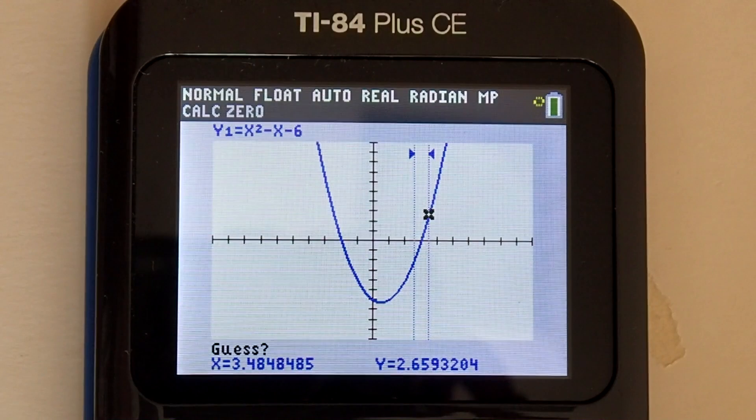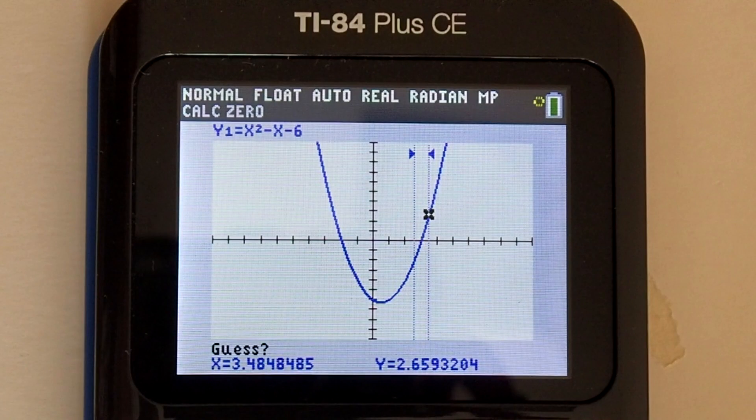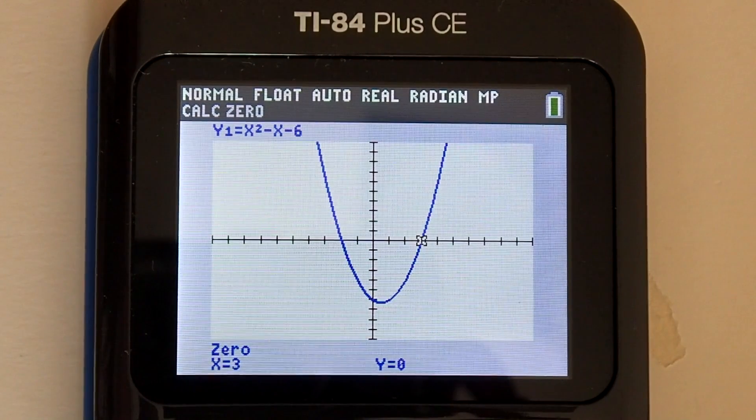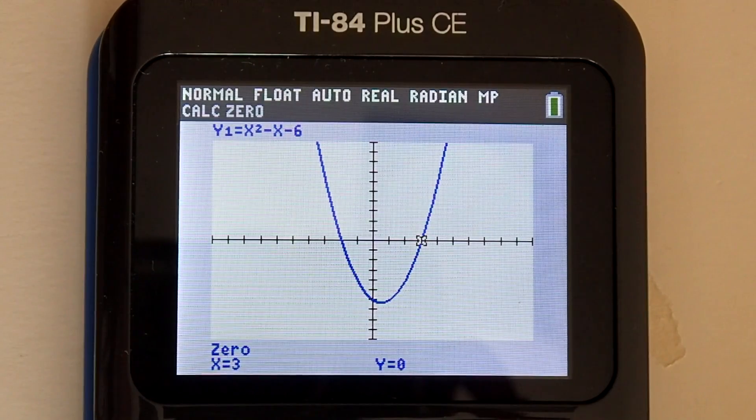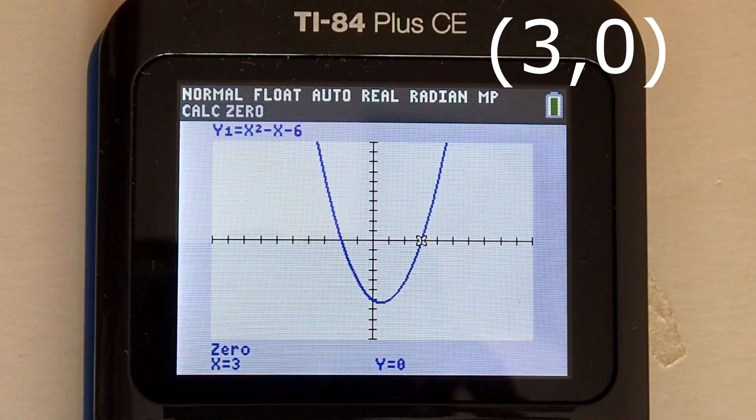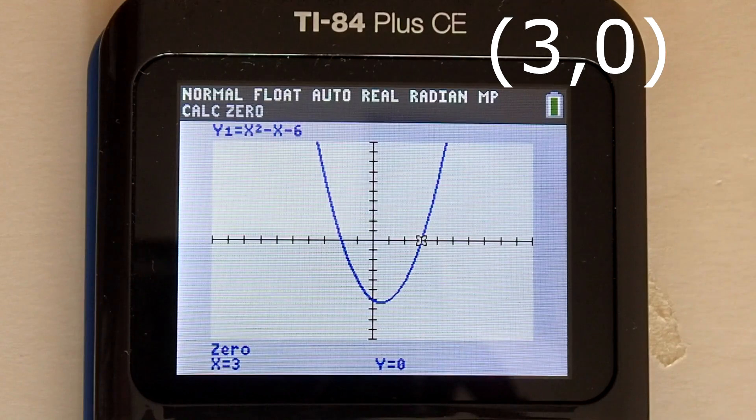Now the calculator says guess. We skip that and press the enter key again. And there on the bottom of the screen it says x equals 3 and y equals 0. That is the other x intercept.